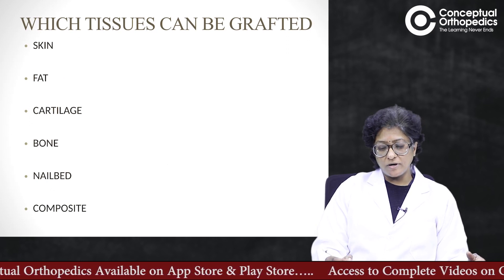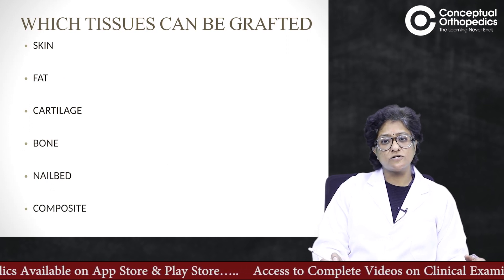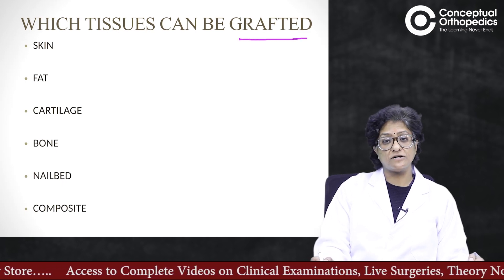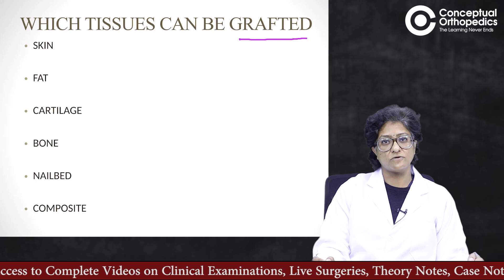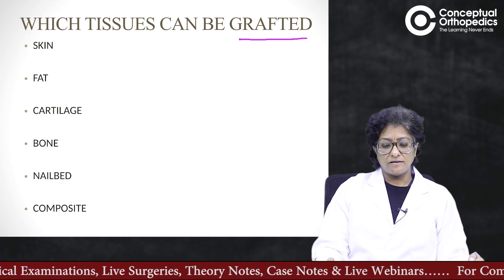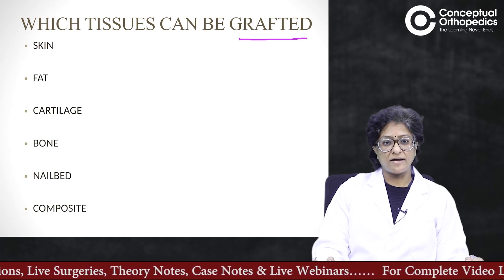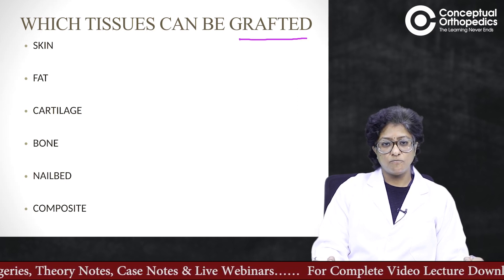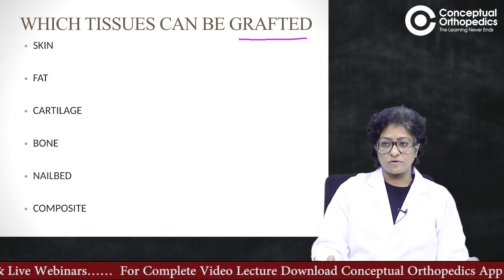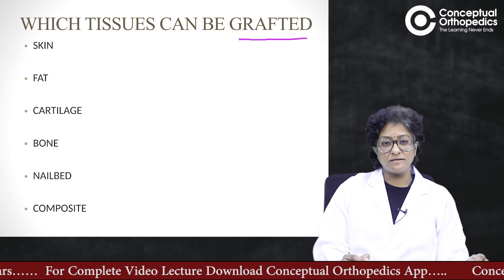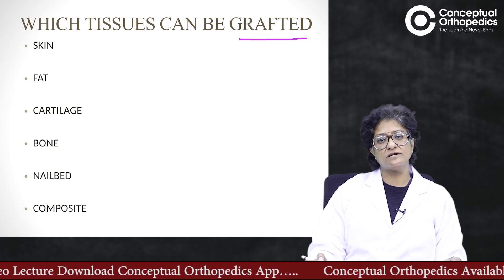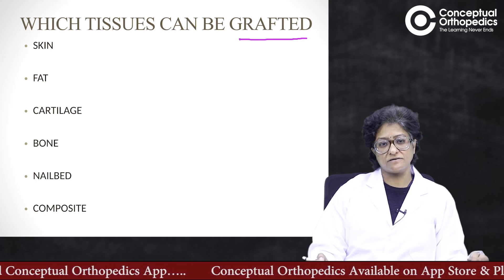We will look at what tissues can be grafted, sticking to the pure terminology of grafting since a lot has changed in terms of flaps and grafts. The tissues that can be grafted are: skin, fat, cartilage, bone, nail bed, and composite grafts — meaning you take two things together. For example, if you take skin and cartilage from the ear and use it to reconstruct the nose, you call it a composite graft.